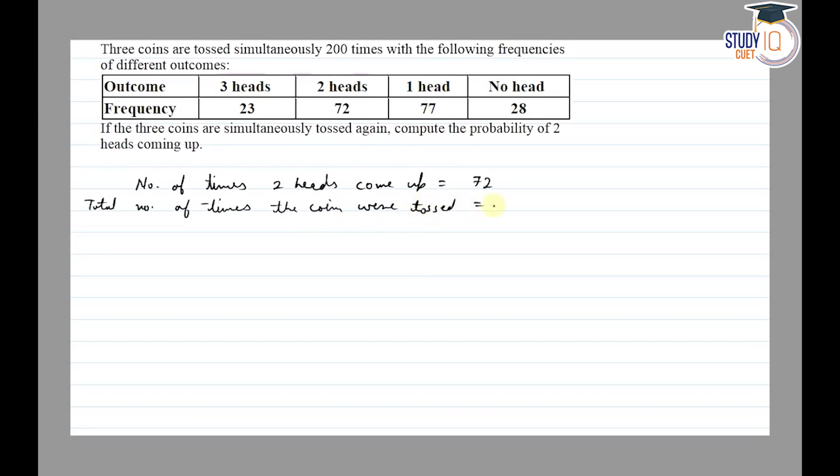So we need to find the probability of 2 heads coming up. This will be favorable outcomes upon total number of outcomes. So we have favorable outcomes 72 and total outcomes 200.